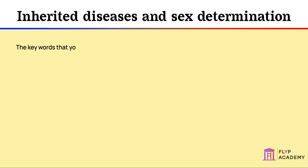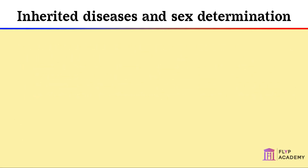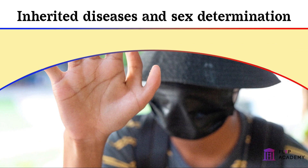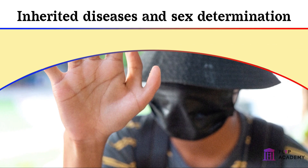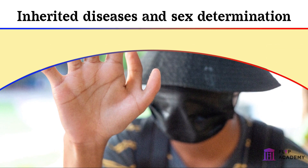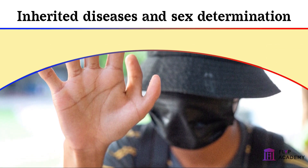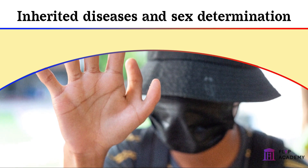The key words that you will need to know are: dominant, recessive, ethical, ratio, and proportion. We already know that all of our genetic characteristics are inherited from our parents, and this can include genetic disorders. You will need to know about some specific genetic disorders, but you could be given information about any other and asked to apply what you know.